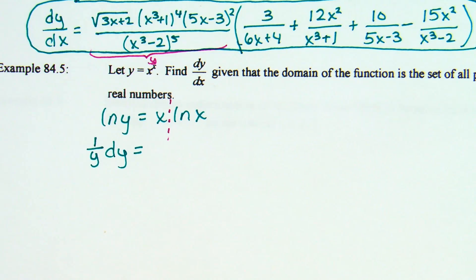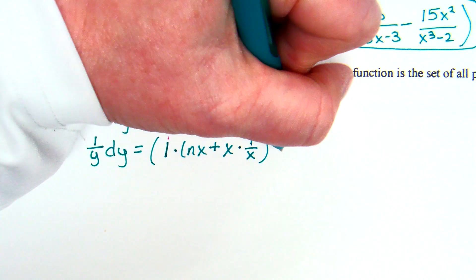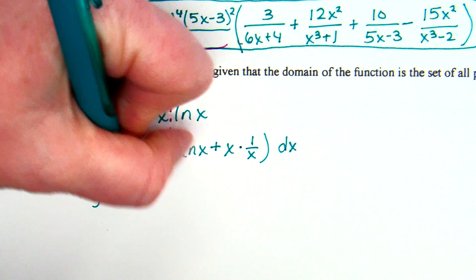So: derivative of x is 1, keep the ln(x), and then plus keep the x, derivative of natural log of x is 1/x. I went ahead and put that side in parentheses. If I clean up what's in the parentheses, this becomes natural log of x plus 1.